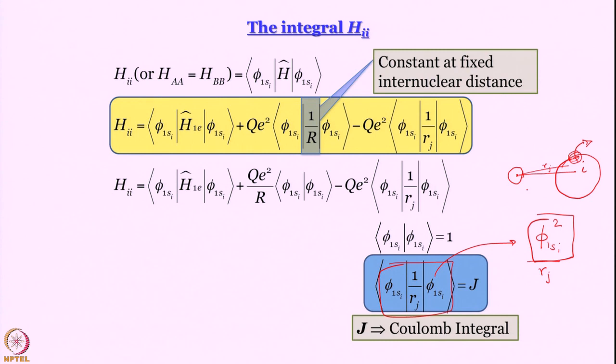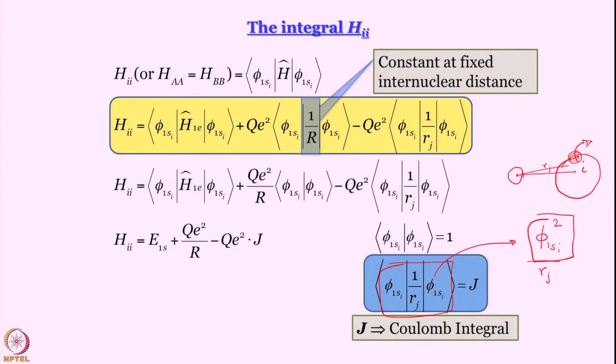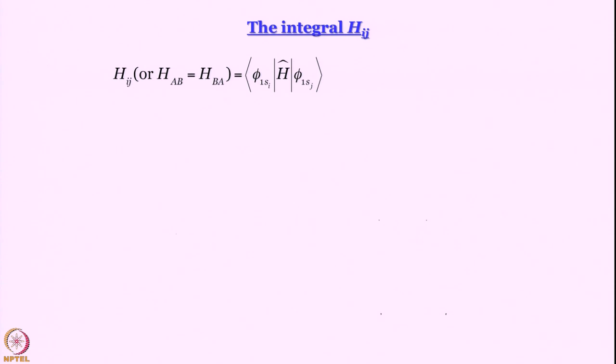So the expression for H_ii is: first term E_1s, second term plus q_e squared by capital R, third term minus q_e squared times J. We have H_ii. Now we turn to H_ij, which is a little more interesting, because unlike H_ii, you have one s orbital in the bra vector and a different s orbital in the ket vector.